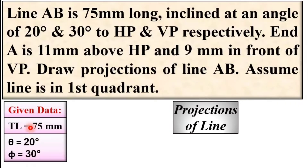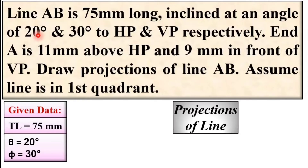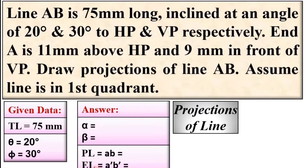First, write down the given data in symbolic notation. Line AB is 75 mm long, so TL = 75 mm. It is inclined at 20 degrees and 30 degrees to HP and VP. The true length inclination with HP is indicated by theta, and the true inclination with VP is indicated by phi. The answer box requires you to find PL and EL — that means AB and A'B'. I am also going to find alpha and beta in this problem for extra information, which can be useful if asked in an examination.